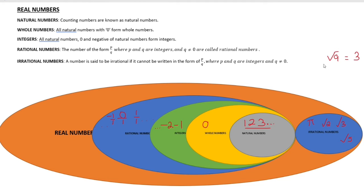For example, the square root of 9 equals 3. Since it equals a whole number, it is not an irrational number — it is a rational number.